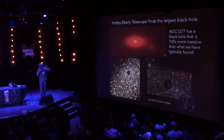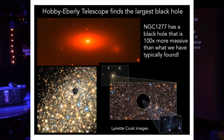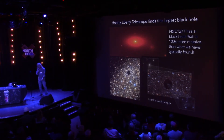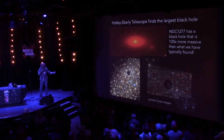One galaxy I've been working on — and we've been taking data from the Hobby-Everly Telescope for a long time — is NGC-1277. It's a normal-looking galaxy, and it has one of the most massive black holes in the known universe. What's special about this galaxy is that it is relatively small — a little bit smaller than our Milky Way galaxy — and it has a black hole that's about 100 times more massive than what you would expect. What I'm trying to do now is a large program to measure the most massive black holes in the universe, because when you measure the extreme things, you have the biggest constraints on the underlying theory.